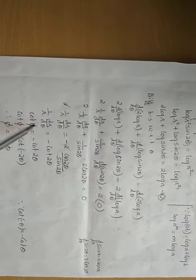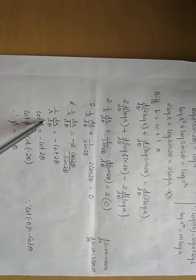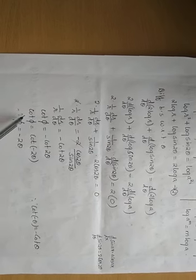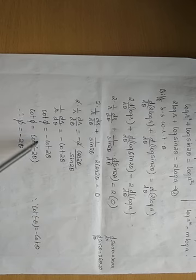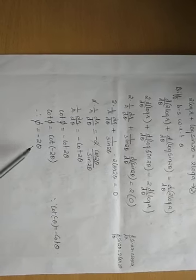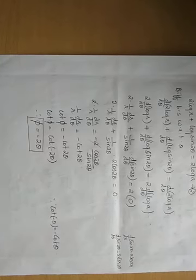1/r, dr/dθ is what? Cot φ minus cot 2θ. Cannot cancel directly. Shift this inside. So, this is cot φ equals cot of minus 2θ. Now, cancel cot cot. So, φ equals how much? Minus 2θ, which is the angle between the radius vector and the tangent. Thank you.